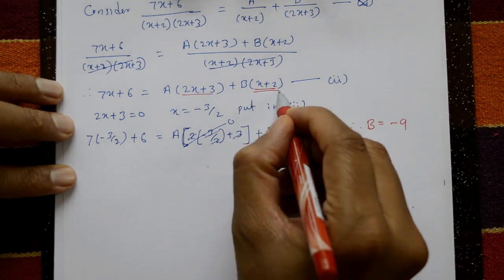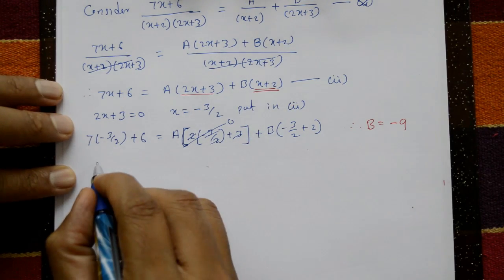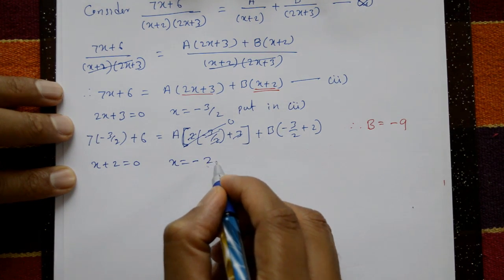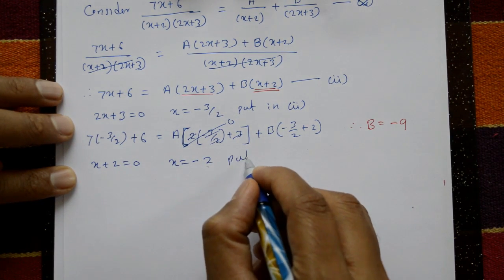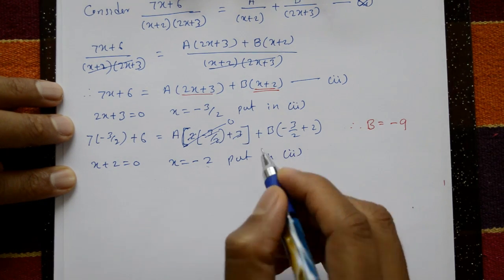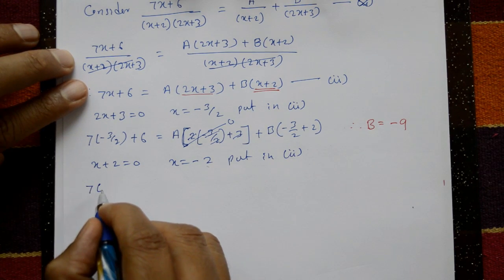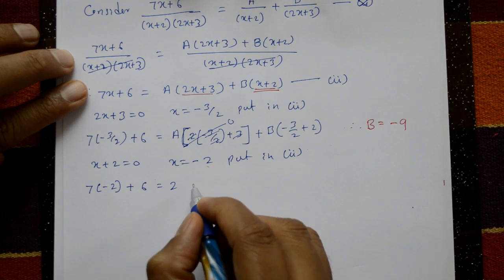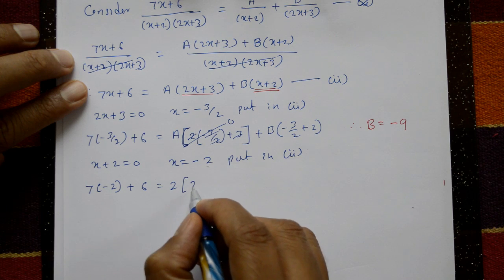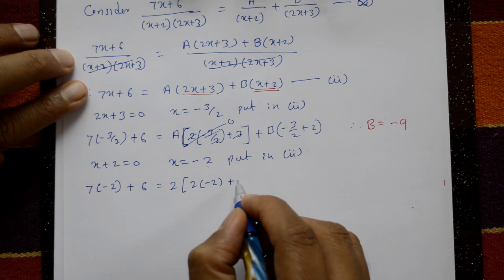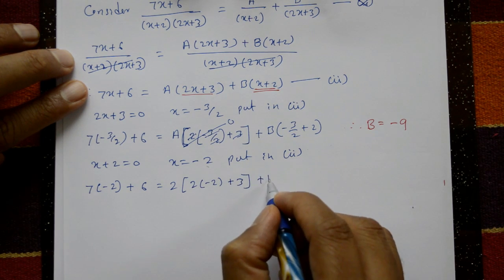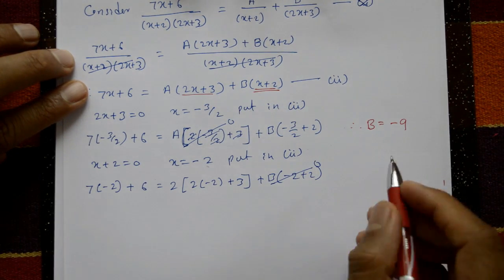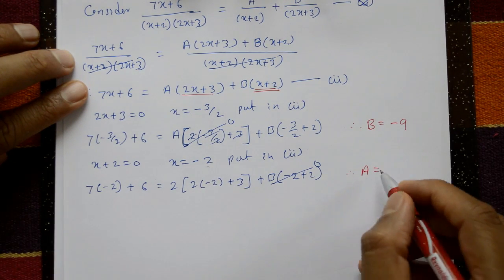Take x+2 = 0, so x = -2. Put x = -2 in equation number 2: 7(-2)+6 = A(2(-2)+3) + B(-2+2). The B term is 0. Therefore A = 8.